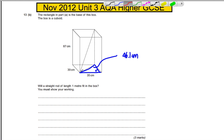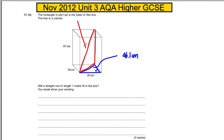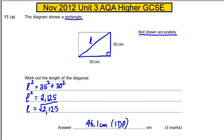What I'm going to do is draw another right-angled triangle here. Imagine this being a right-angled triangle, and the rod we're concerned about would fit across like that. You know this is right-angled, and you know this distance here is 46.1, and in particular if you square it, it's 2125.